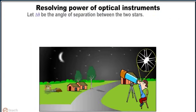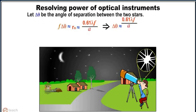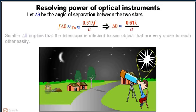Let delta theta be the angle of separation between the two stars. Then f times delta theta is approximately equal to 0.61 lambda f by a. This implies delta theta is approximately equal to 0.61 lambda by a.